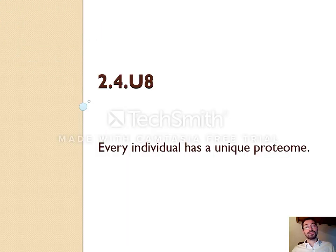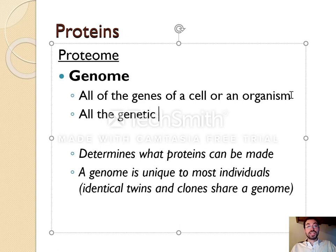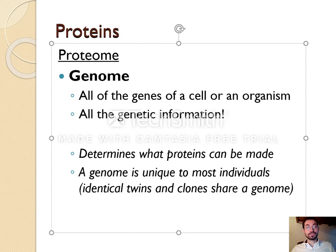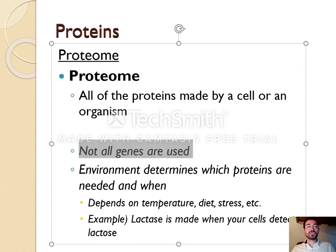The last idea for the day: we spoke about the relationship between genes and proteins. Genes are pieces of DNA that code for proteins. Now we have the word genome. The genome is all of the genetic information in an organism, including all the genes — really all the DNA. A genome is unique to most people, but identical twins have exactly the same genome, and clones would too. The DNA you're born with is the DNA you will die with. Your proteome is all the proteins in an organism, and what's interesting is it's very different from your genome, because not all the genes you have are used.